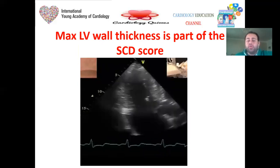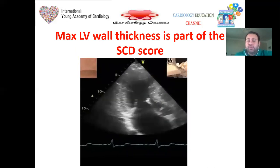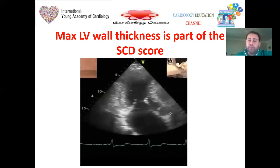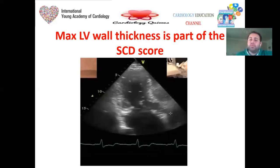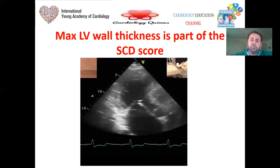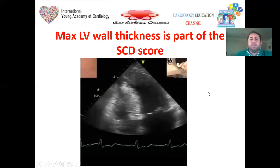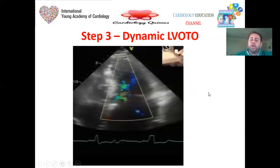Exhaust yourself in all views — apical 4, apical 2, and apical 3 chamber views, parasternal long axis and short axis — using M-mode at different planes to get the maximal LV wall thickness. This is critical because maximal LV wall thickness is part of the sudden cardiac death score for HCM. At this point, if one or more LV segments have thickness more than 16 millimeters with asymmetrical septal hypertrophy, this patient probably has hypertrophic cardiomyopathy.